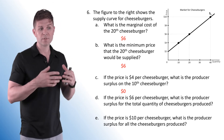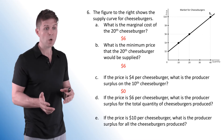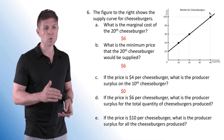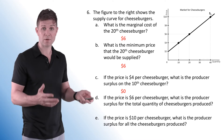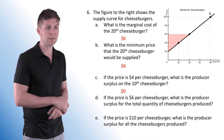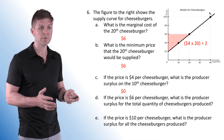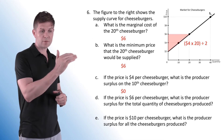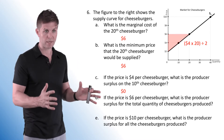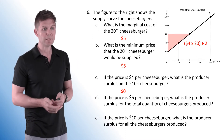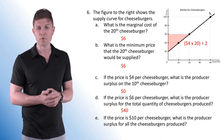D asks: if the price is $6 per cheeseburger, what is the producer surplus for the total quantity of cheeseburgers produced? We find the area of the triangle again. At $6, the quantity in the market is 20. The height of the triangle is $4, times 20 as the base, divided by 2 — we end up with a producer surplus of $40.